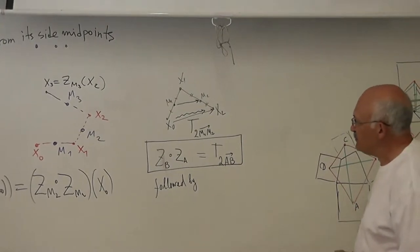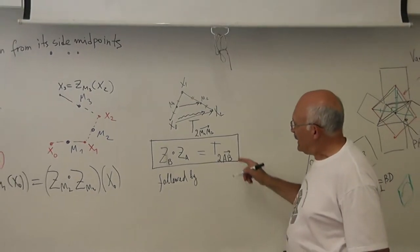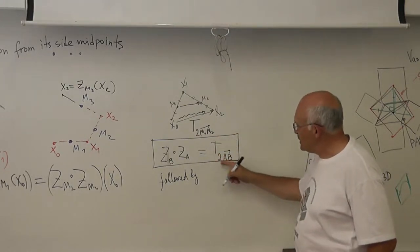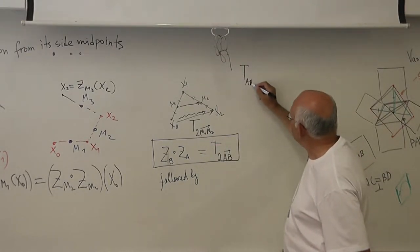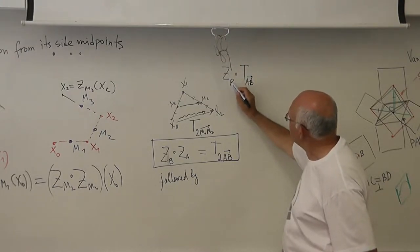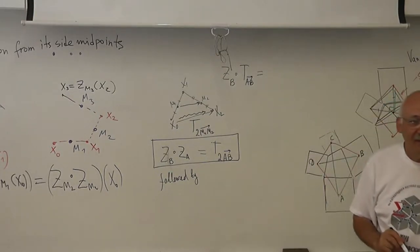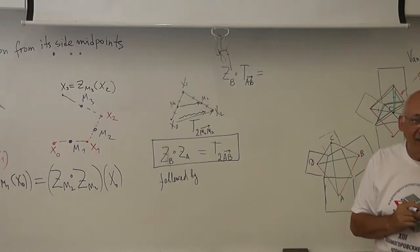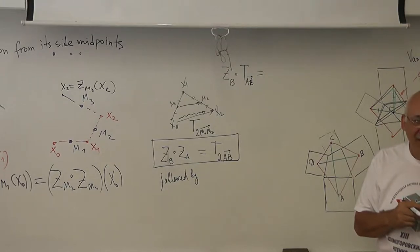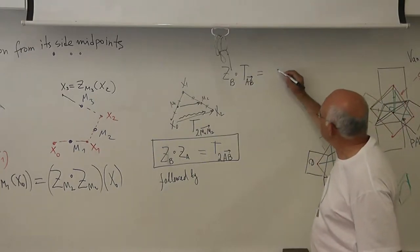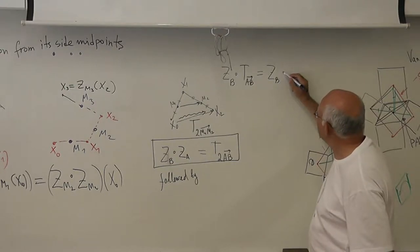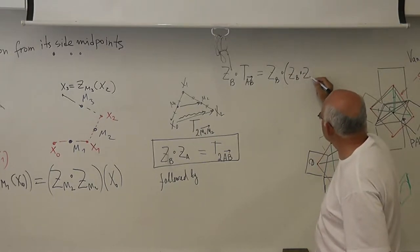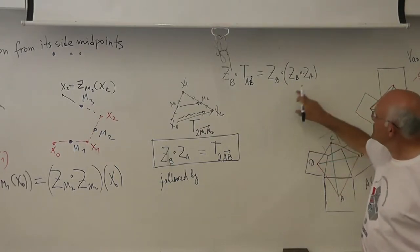Now, I can do the following trick. Let us perform one more ZB after this. So, I will take this translation followed by ZB. TAB followed by ZB is equal to what? What is it? The composition of ZB by central symmetry A multiplied by a translation by a vector AB? After ZB and ZA. Yes?